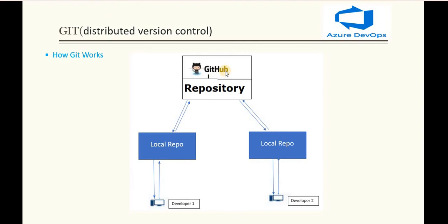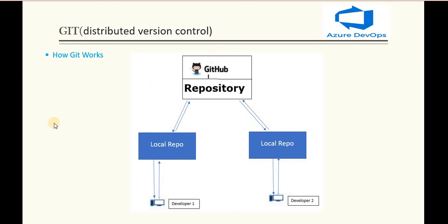Let's suppose this is the main repository and a developer comes to the organization and starts working on a project. What they do is clone that particular repository locally. The developer starts working on a particular branch and checks in the code, pushing it into the local repository. Finally, the local repository pushes into the main branch or main repository. In centralized version control, whatever changes they were doing, they would push directly into the main repository. But here in distributed version control, in between the developer and the main repository, there is a local repository.